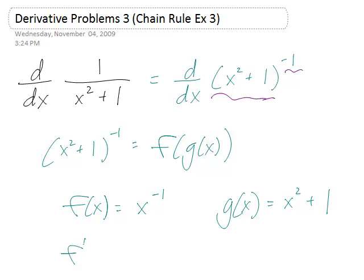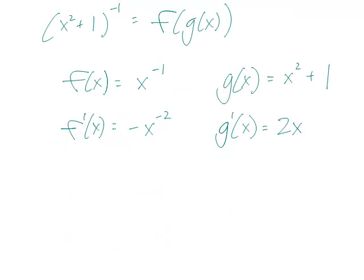And so f prime of x, using the power rule, would give us minus x to the minus 2. And g prime of x, once again using the power rule, is 2x plus 1. Then the constant disappears, so we only have 2x.